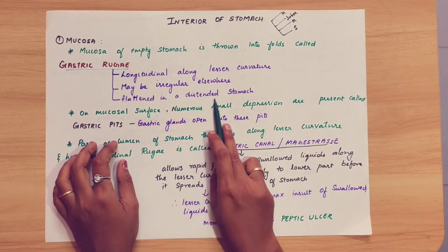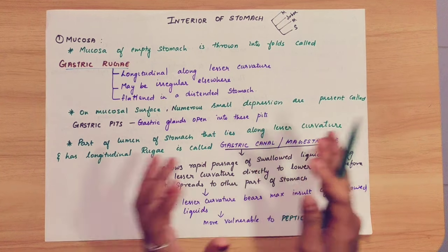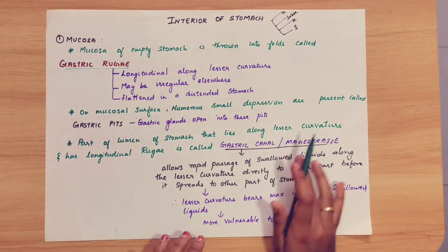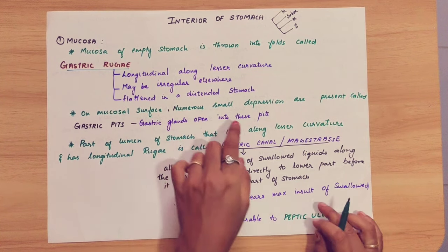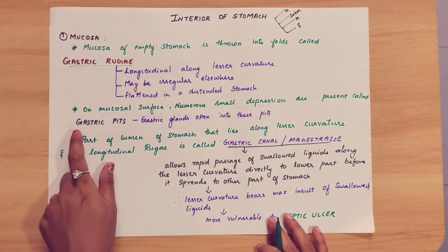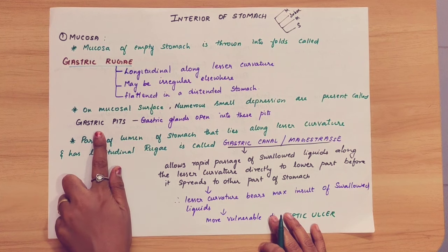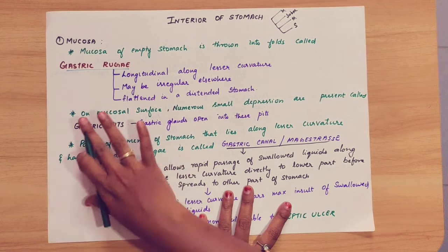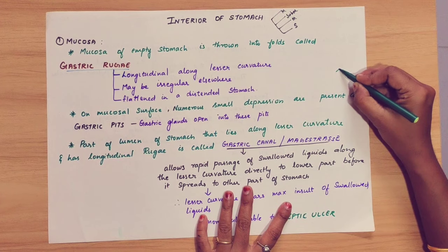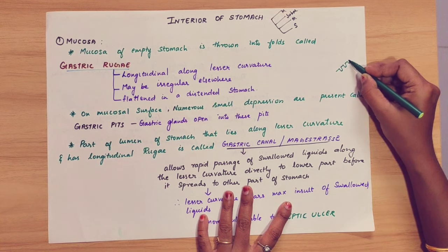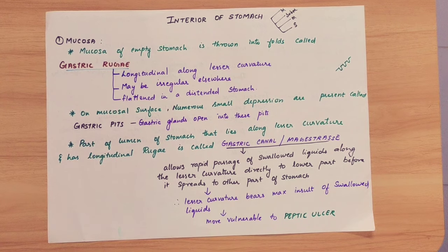On the mucous surface, numerous small depressions are present, which are called gastric pits. In the mucus layer, there are very small depressions present — these are the gastric pits.